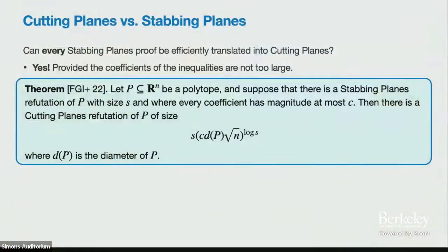Our main theorem says: if the coefficients of a stabbing planes proof are not too large, then you can quasi-polynomially convert any stabbing planes proof into a cutting planes proof. More formally, if you have a polytope with a stabbing planes proof of size S where each coefficient has magnitude C, then you get a cutting planes proof whose size has a dependence on the diameter of the polytope — I'll explain why that comes in.